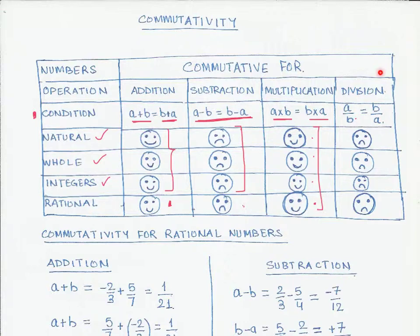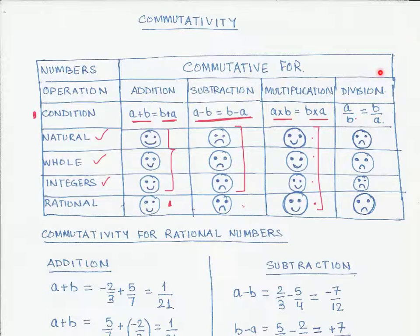What this means practically is that you can add or multiply these numbers in any order without changing the result. But if you try subtraction or division by changing the order of the numbers, you may get a different result. In the next video, we are going to learn the proof for the commutative property for rational numbers.